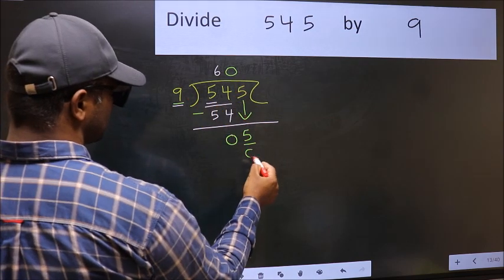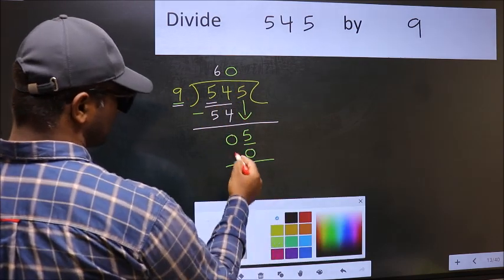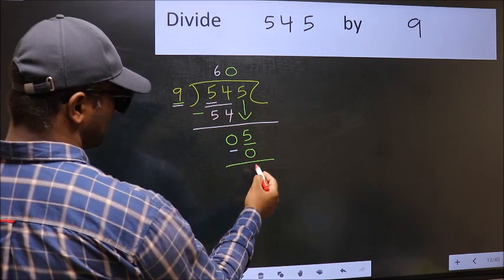So 9 into 0, 0. Now we should subtract. 5 minus 0, 5.